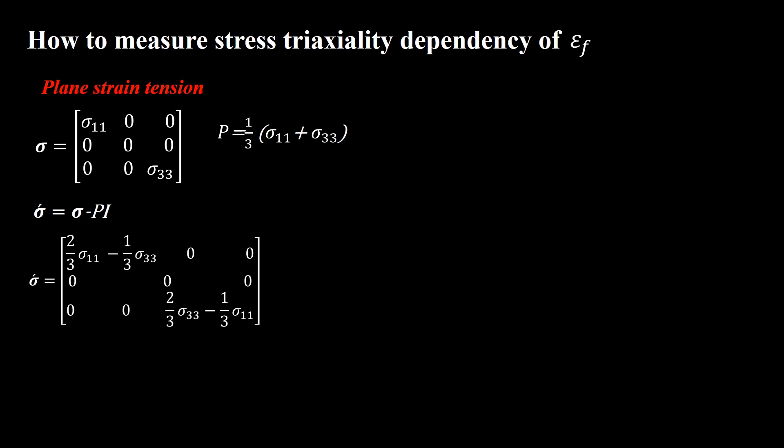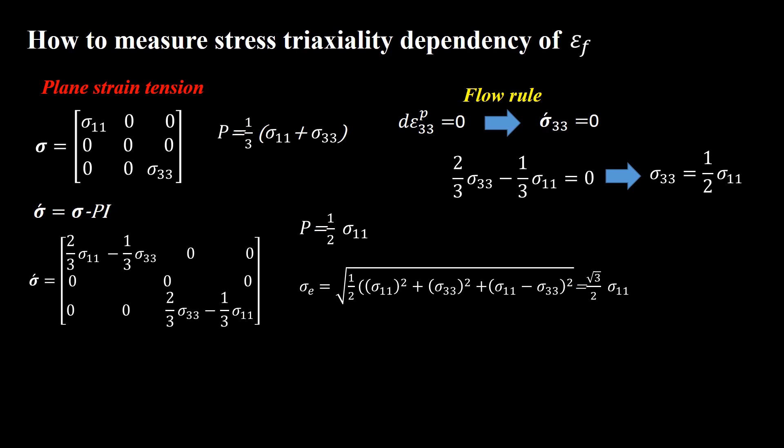For plane strain tension, the stress tensor is in the following form. We can calculate the hydrostatic pressure and then deviatoric stress tensor. We know that the normal strain is zero among the third direction, therefore based on the flow rule of the Mises plasticity, the related deviatoric stress component should also be zero, so we can conclude that. Now we rewrite the hydrostatic pressure and calculate the equivalent Mises stress. Finally, stress triaxiality is...